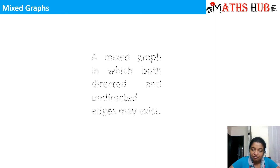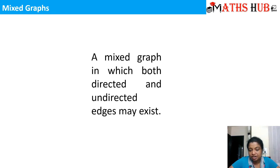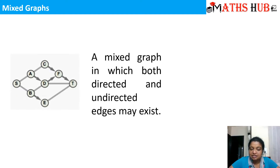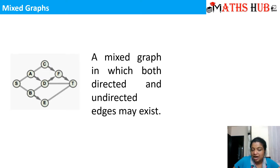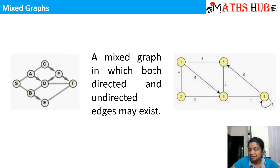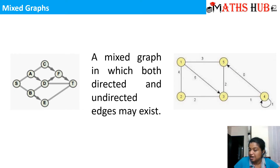The next graph is a mixed graph. A mixed graph means when on some edges there are directions and on some edges there are no directions — it's a mix and match of both. Here you can see that some of the edges don't have any direction while some of the edges have some direction, so this is an example of a mixed graph. In another example, you can see some numbers marked on the edges — these are the weights assigned, which we will discuss towards the end of this chapter. Some edges have no direction while some have direction — this type of graph is called a mixed graph.